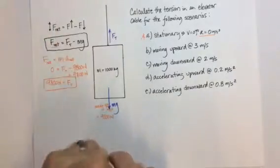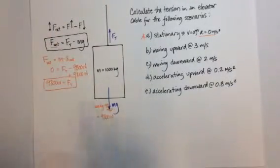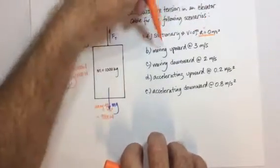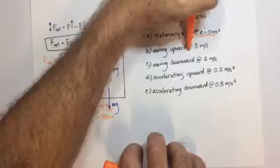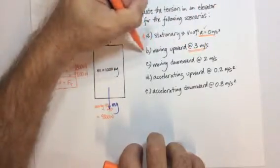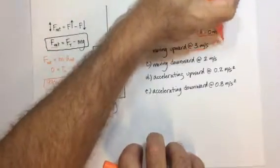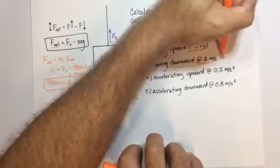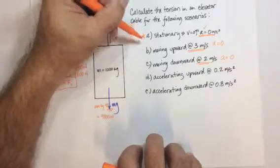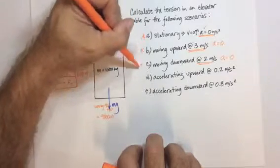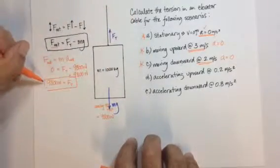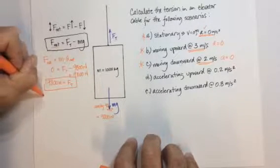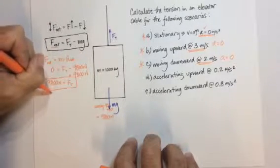This applies to any situation where net force is zero — where acceleration is zero. That means if the elevator is moving upward at a constant 3 meters per second, acceleration is zero. And if it's moving downward at a constant 2 meters per second, acceleration is also zero. So for scenarios A, B, and C, the tension force is equal to 9,800 newtons.